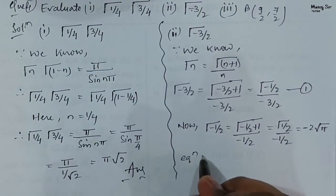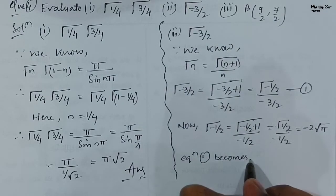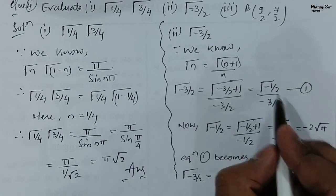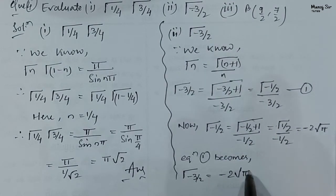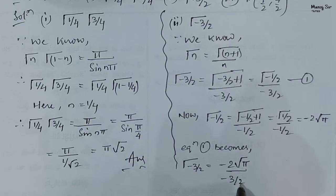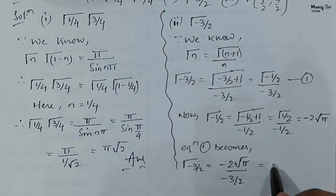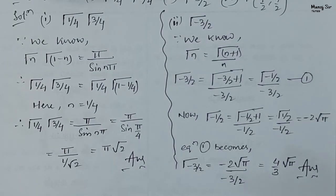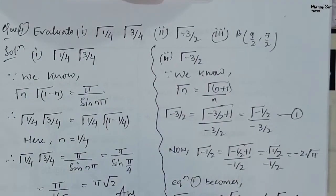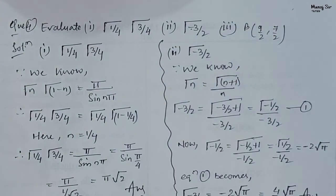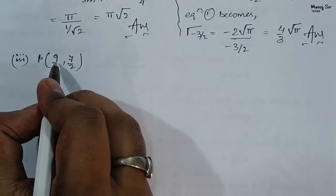Substituting back into equation 1: gamma(−3/2) = (−2√π) / (−3/2). The negatives cancel and bringing 2 to the numerator gives 4√π / 3. This is the final answer for the second part. Now coming to the third part, which is very important: beta(9/2, 7/2).